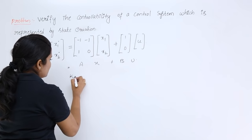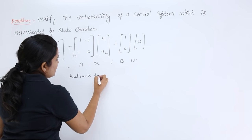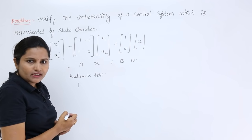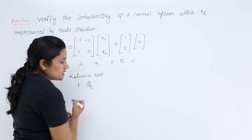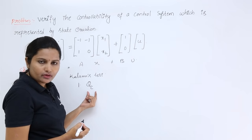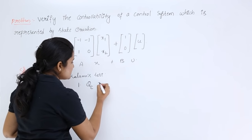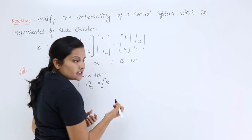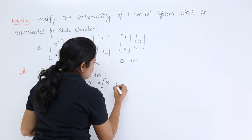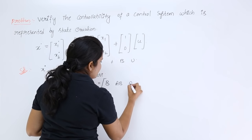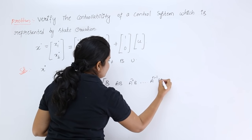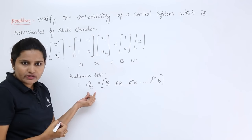In this controllability test, we have two steps. The first step is to derive the controllability matrix QC. The formula for QC is: QC = [B, AB, A²B, ..., A^(N-1)B], as we already discussed in the controllability video.